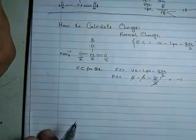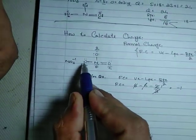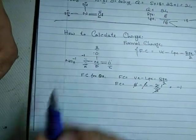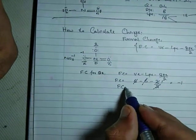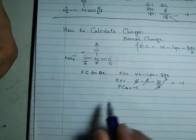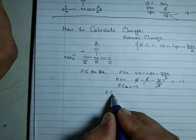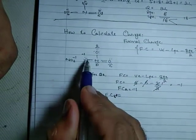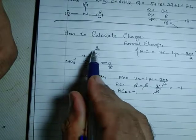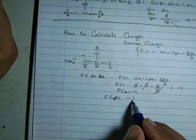So the FC for oxygen A is minus 1. Now let's calculate FC for B, which also comes out to minus 1.